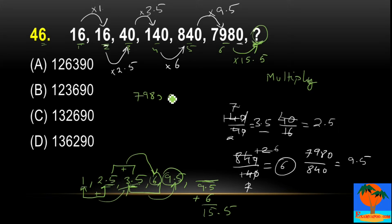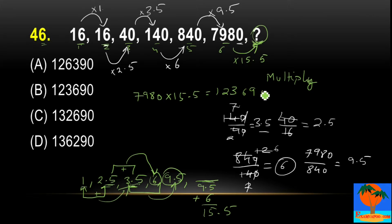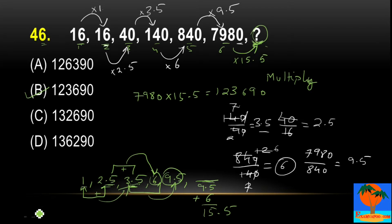When you multiply 7980 by 15.5, you get 123690. So the next term should be 123690, which is option B.